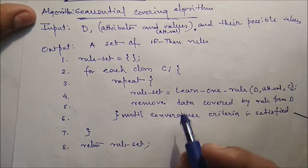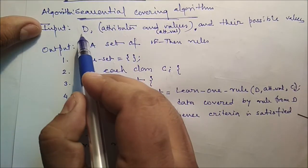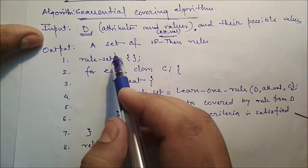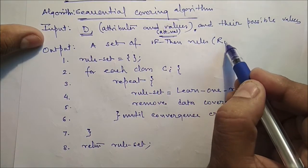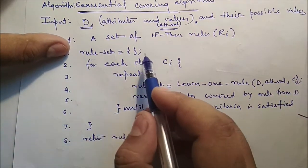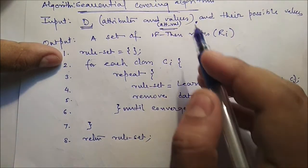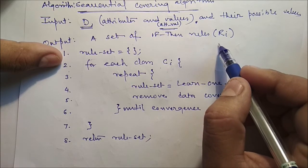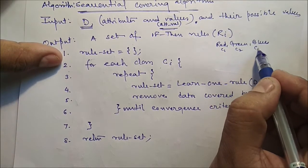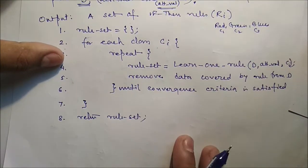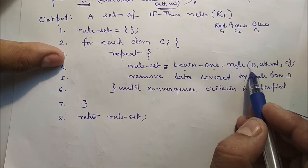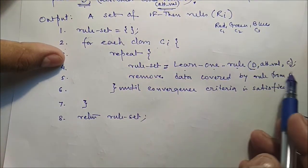In the sequential covering algorithm, the input is the database D and attribute values (entity and their possible values). The output will be a set of if-then rules. First step: an empty rule set is created. Second step: for each class C — say classes are red, green, and blue, so C1, C2, and C3 — for each class C, repeat and call the function 'learn one rule'.